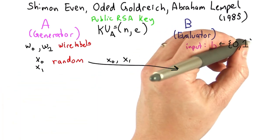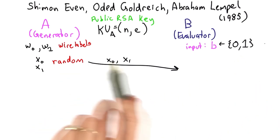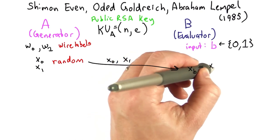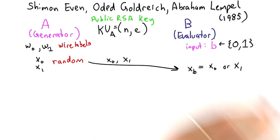Depending on which wire label Bob wants, Bob has some input, either 0 or 1. He's going to pick either the first or the second of these. So he's going to pick xb is equal to either x0 or x1, depending on his value of b.